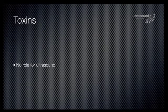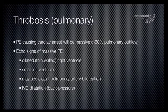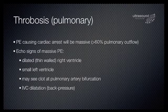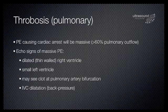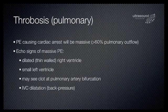There's no role for ultrasound in determining presence of toxins. However, for pulmonary thrombosis, echo can look for indirect signs of massive PE. This relies on the premise that only a large PE — greater than 60% pulmonary outflow obstruction — will actually cause a cardiac arrest. The echocardiographic signs in massive PE will be a dilated right ventricle.